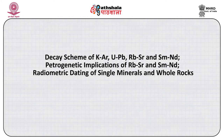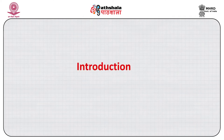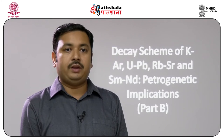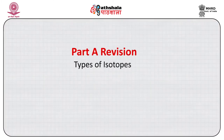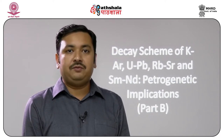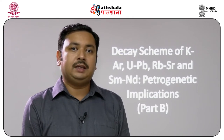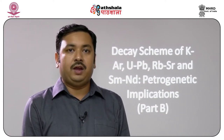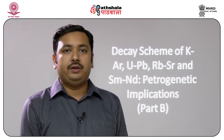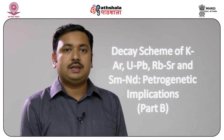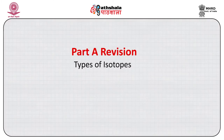This module covers petrogenetic implications and uses in radiometric dating of minerals and rocks. As I said in the previous lecture, this module is covered in two lectures. In the first lecture I covered the different types of isotopes — stable isotopes which remain indefinitely, and radioactive isotopes which decay with time into stable nuclides. This decay is proportional to the number of parent atoms present in the sample, and the proportionality constant is called the decay constant.